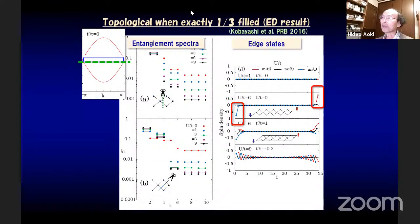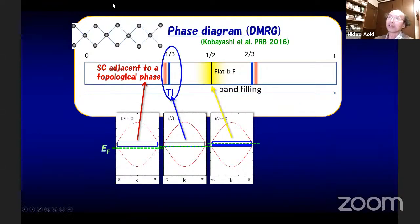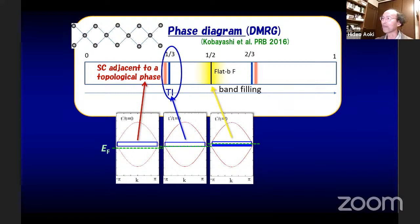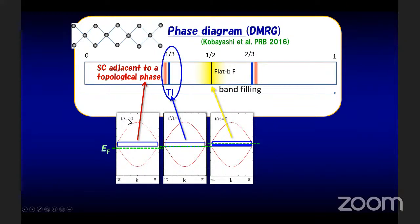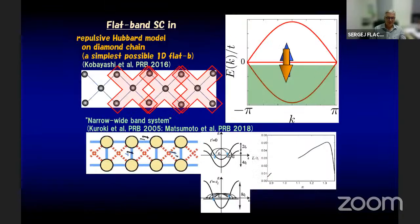How do I know the one-third filling state is topological? We can examine this via entanglement spectra and their degeneracies. T is nearest neighbor hopping and T prime is second neighbor hopping. By changing T prime, we can distort the flat band into a dispersing band. T prime is a control parameter, and I'm mainly talking about T prime equals zero.